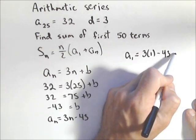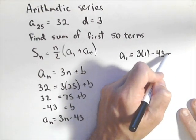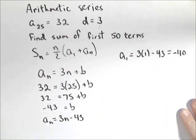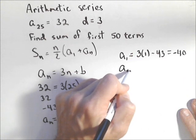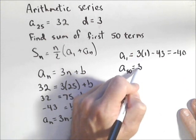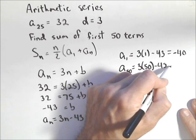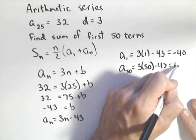So three minus 43 is gonna give us negative 40. So there's our a₁. Our a₅₀ is three times 50 minus 43. So 150 minus 43 gives us 107.